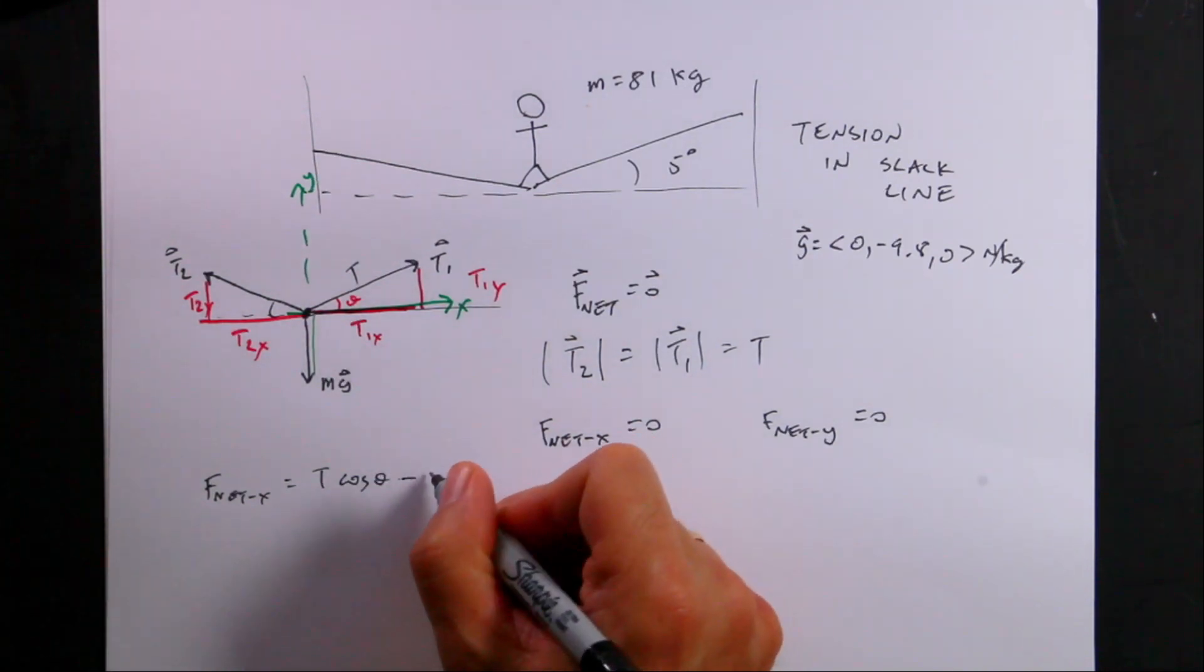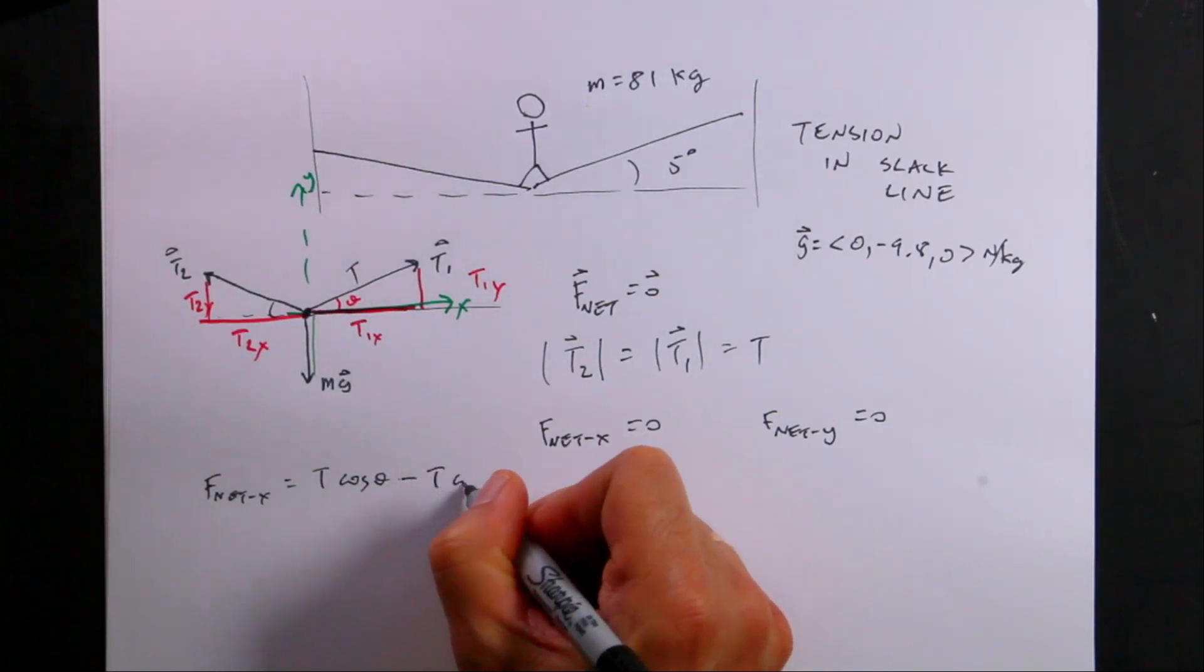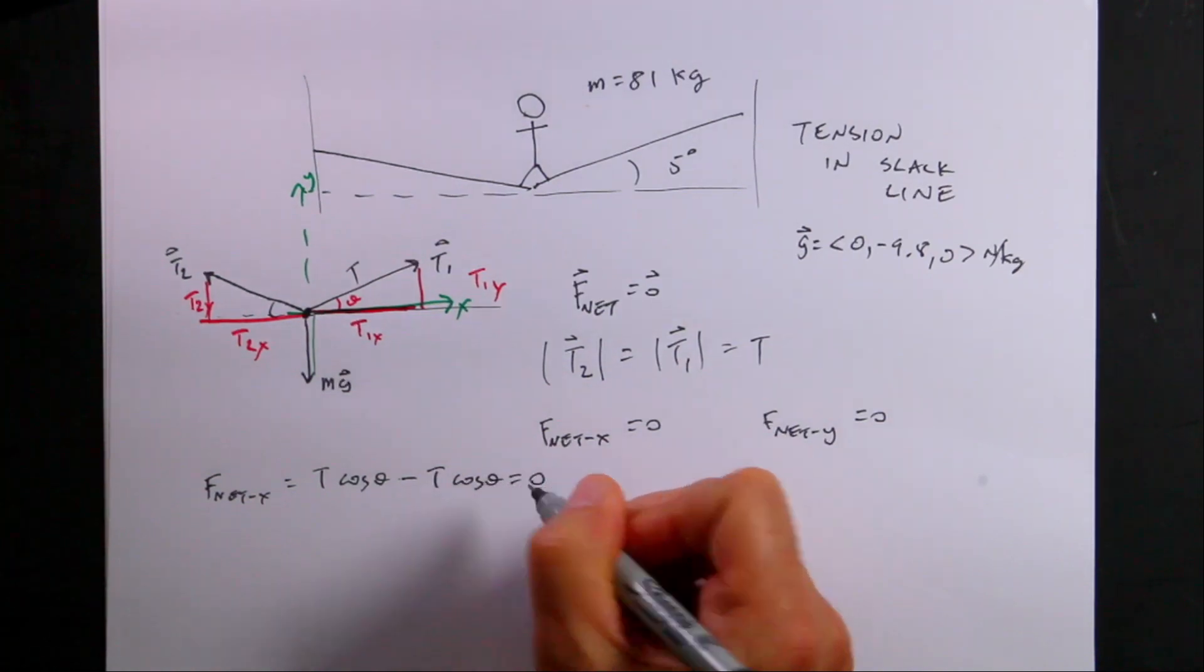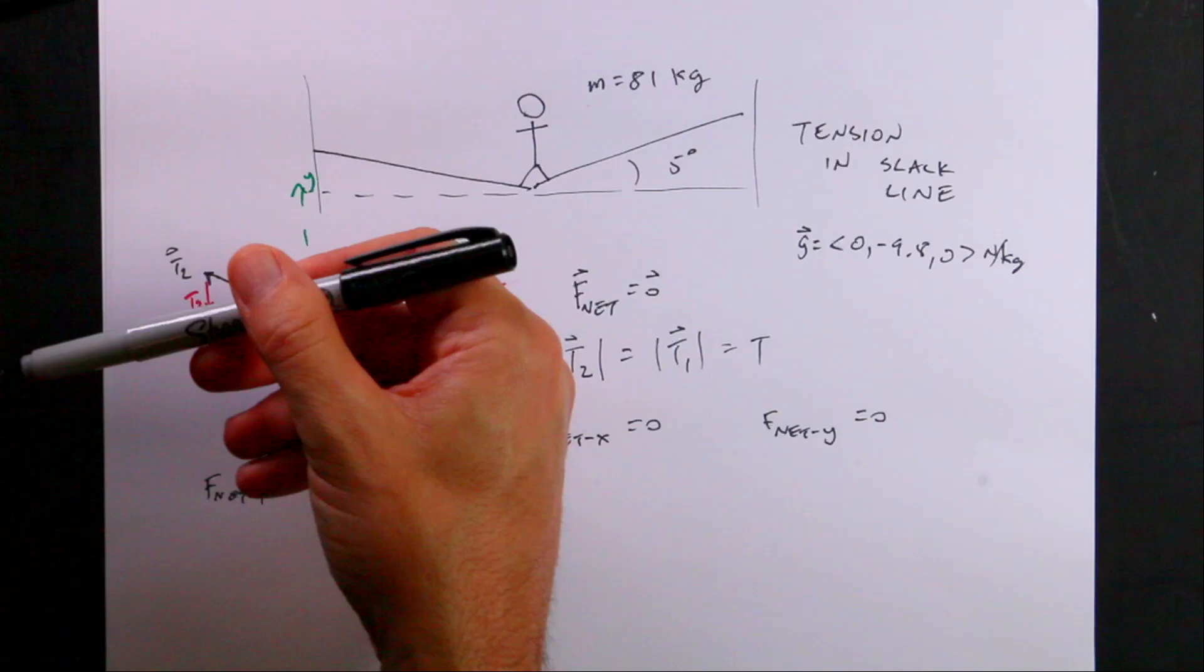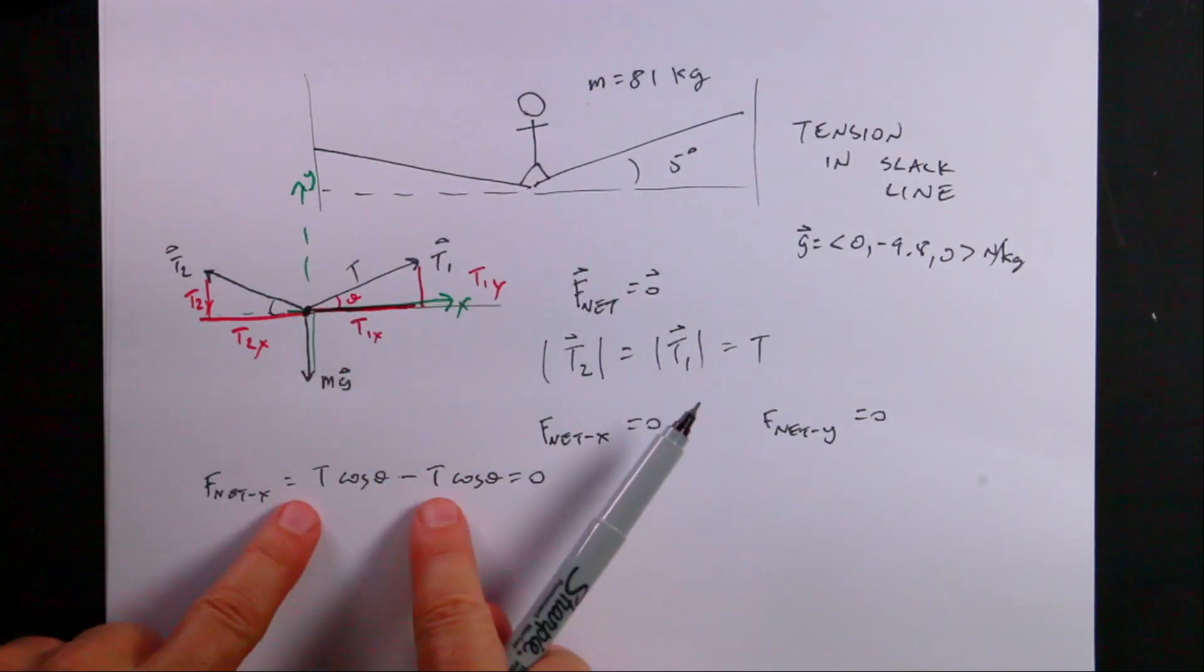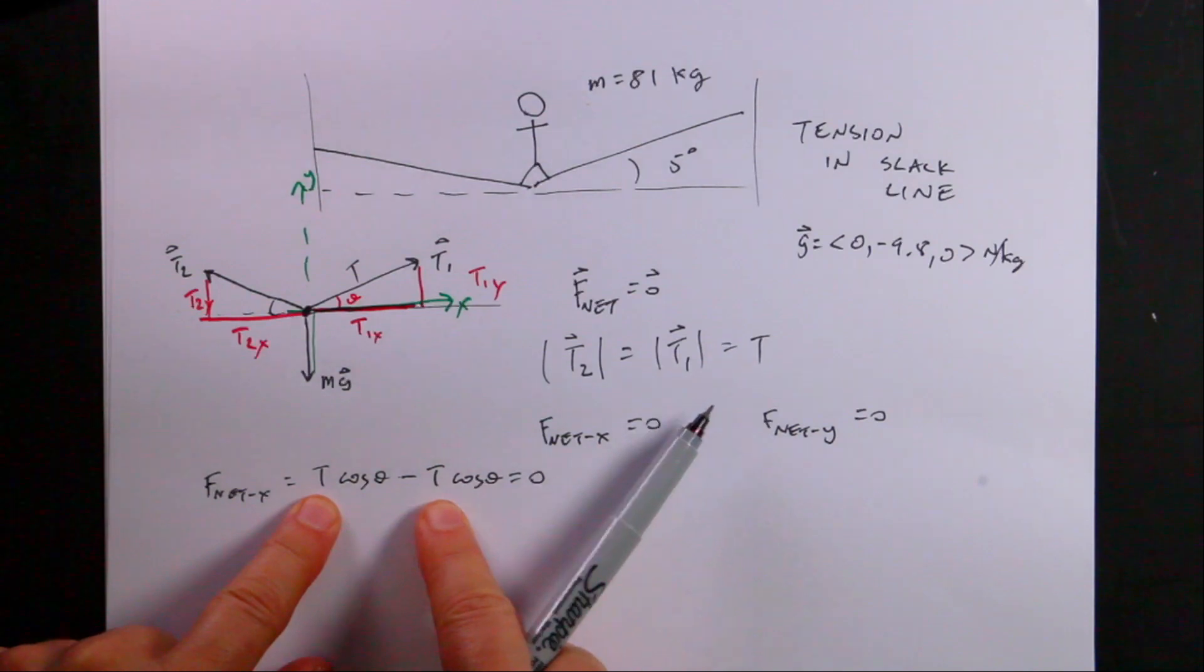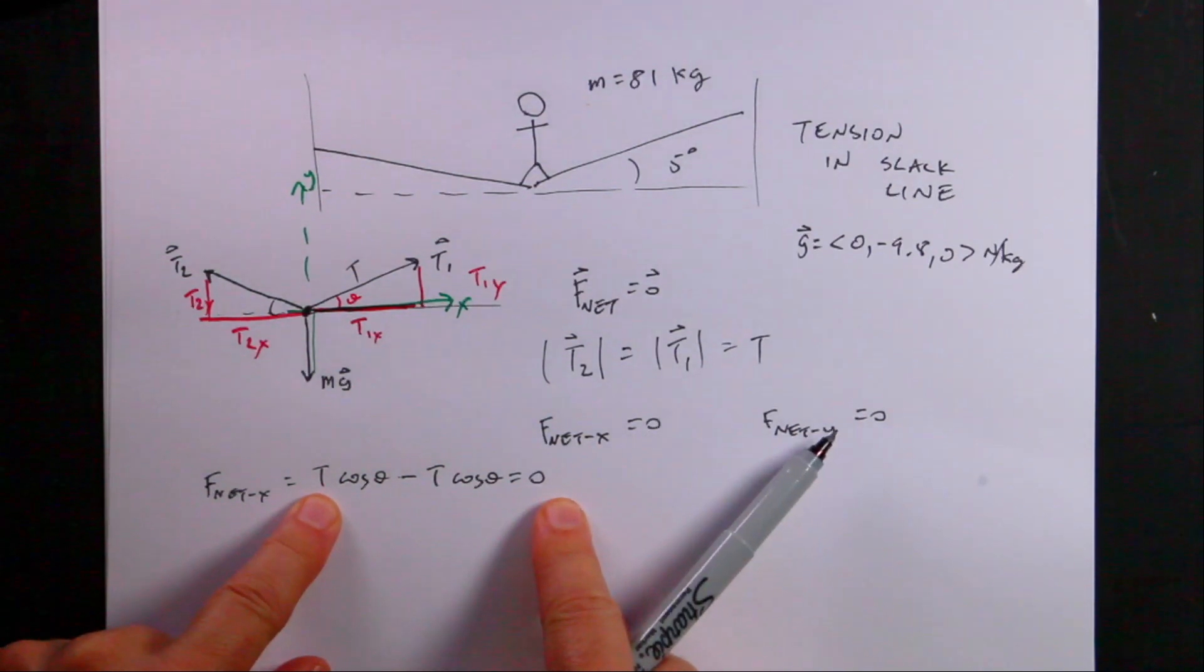Then I can write this as minus T cosine theta. And so this one's minus because it's in the negative x direction. And here you see that if the magnitude of the tension is the same,